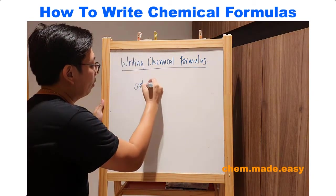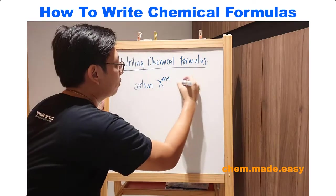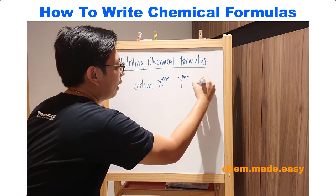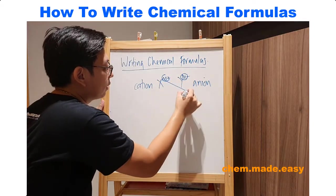I get students to write the cation, say XM+, and the anion, say YN-, and all you want to do is take the charge, the number, and cross it down.